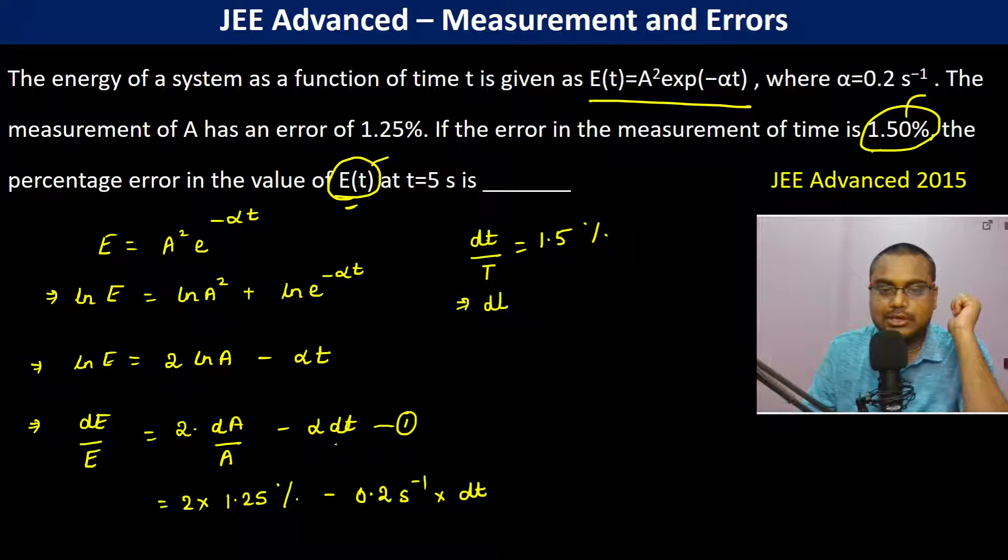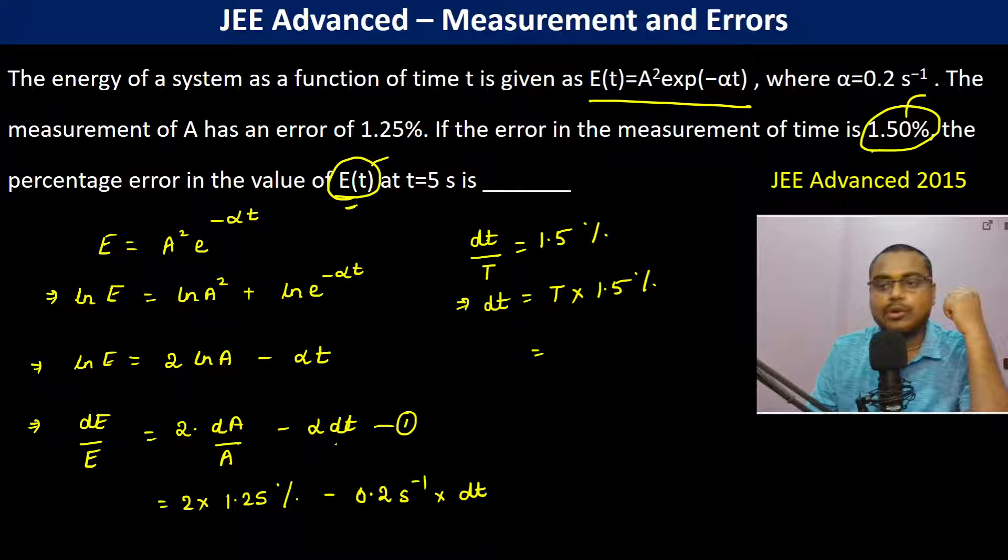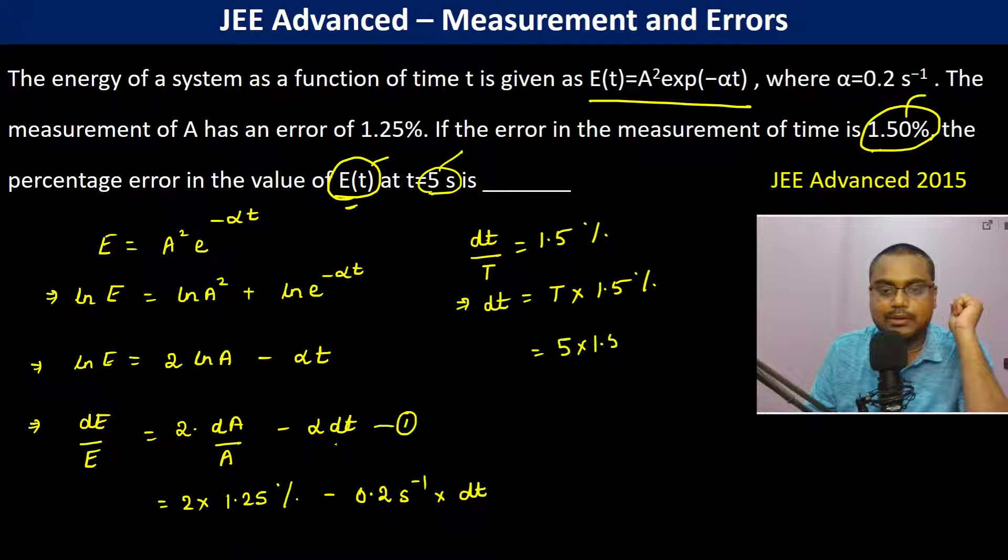So therefore dt is going to be equal to t into 1.5 percent, which is equal to, now what is that time mentioned here? Time mentioned is 5 seconds. So 5 into 1.5 percentage.